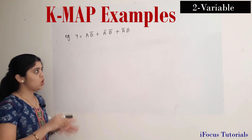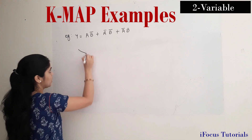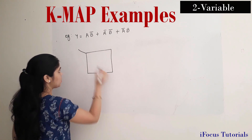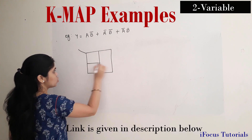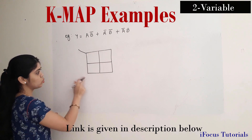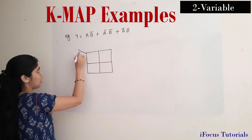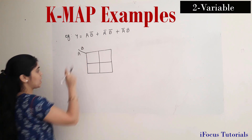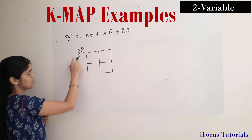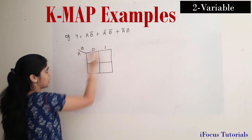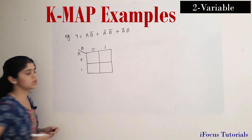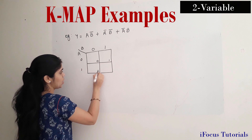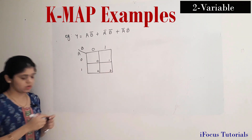First I will draw a two variable KMAP, as I have shown the structure in my previous video. I am drawing a two variable KMAP now with alphabets A and B, writing the variable names and the gray code sequence. So it is 0 and 1. I will write the box numbers also.